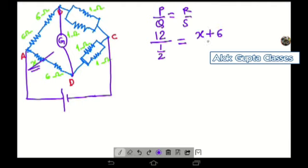R, six and X, they are connected in series. And S, one ohm, one ohm connected in parallel, so it is half ohm.